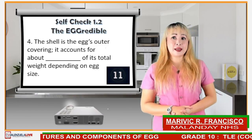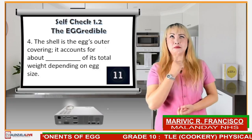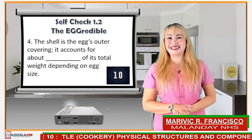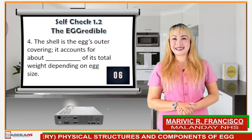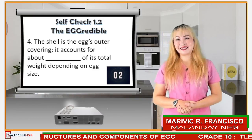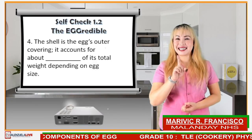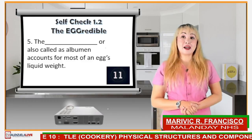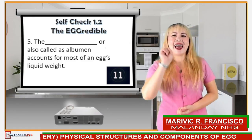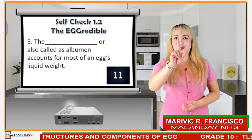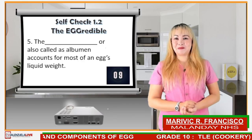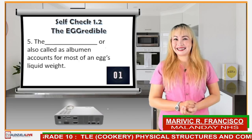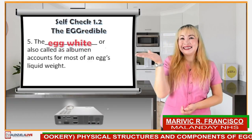Number 4 — the shell is the egg's outer covering. It accounts for about how many percent of its total weight, depending on egg size? The correct answer is 9 to 12 percent. Number 5 — the blank, also called as albumin, accounts for most of an egg's liquid weight. The answer is the egg white.